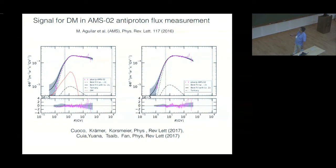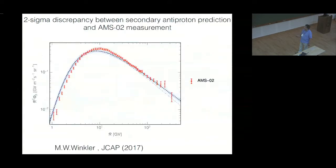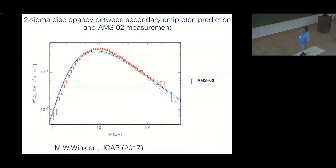One key difference between the AMS antiproton and AMS positron signals is that there are no antiprotons produced in pulsars — there is no astrophysical source of antiprotons. The uncertainty can only be in the secondary production calculation from primary cosmic rays. A more detailed paper found a two-sigma discrepancy between the theory for secondary production and the AMS data, which may be a signal of dark matter.